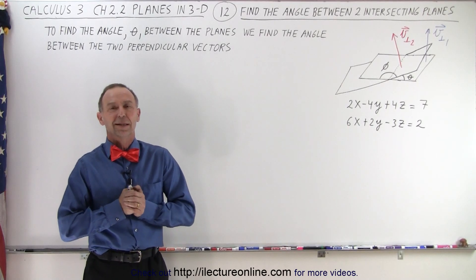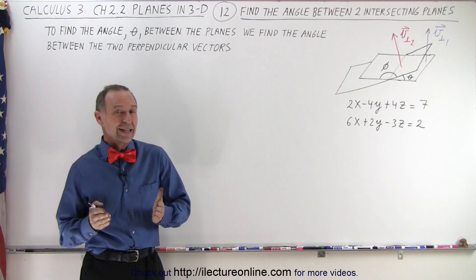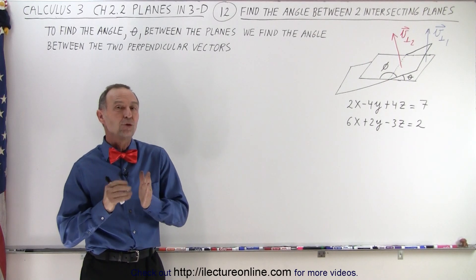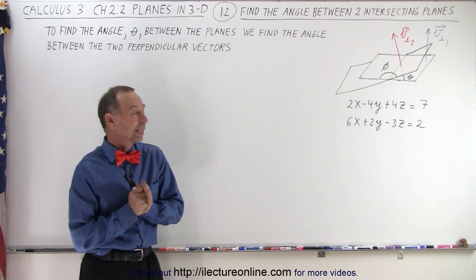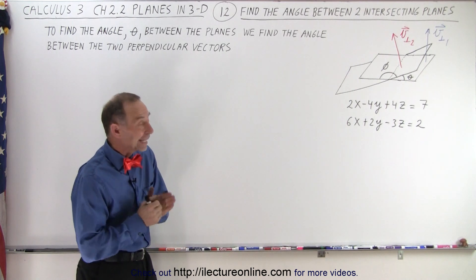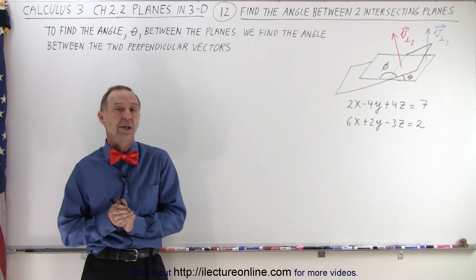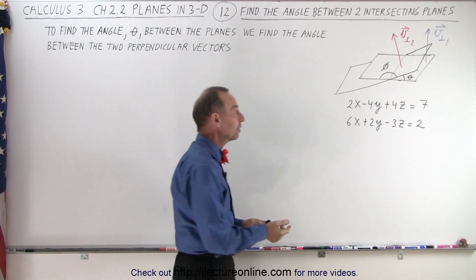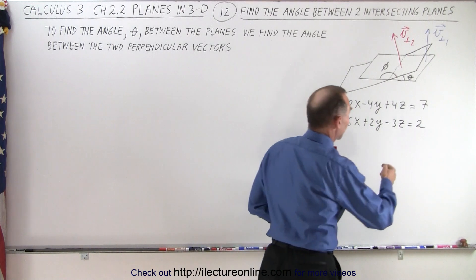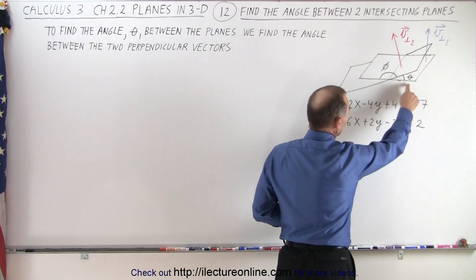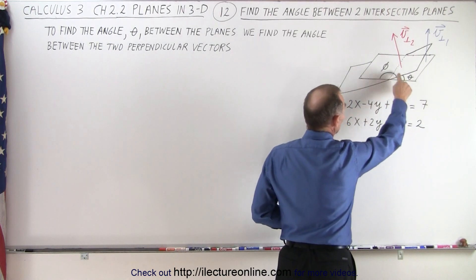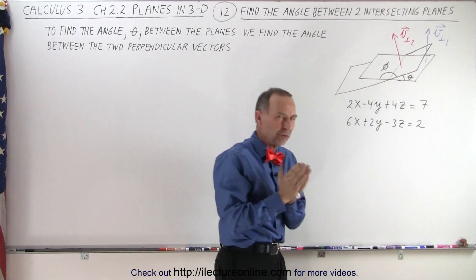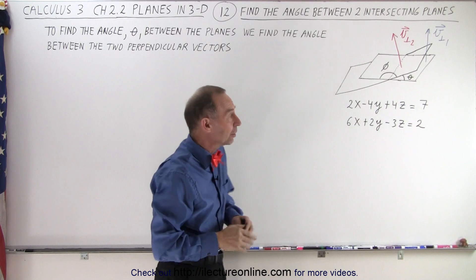Welcome to White Lecture Online. How do we find the angle between two planes that intersect one another? If you look at it, there are really two angles. We can look for the angle theta and we look for the angle phi. So we want to look for the acute angle.